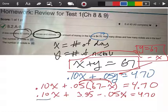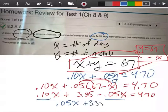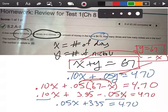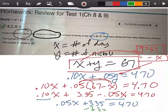All right. We can combine these terms because they're both x's. So that's going to give me 0.05x plus 3.35 equals 4.70. I'm going to minus 3.35 on both sides.